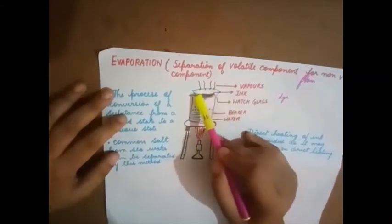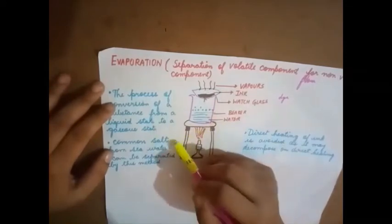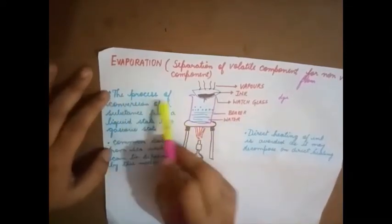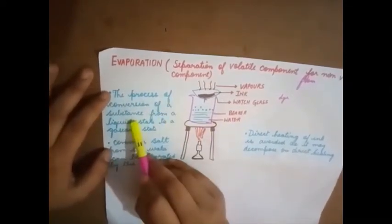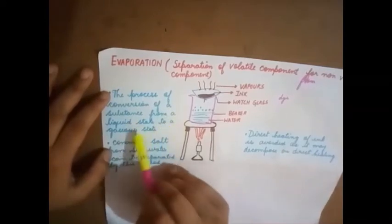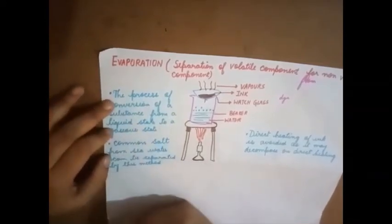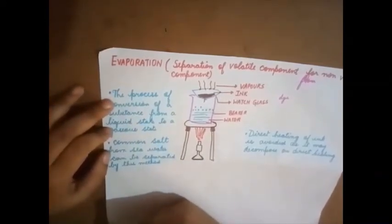water, which is a volatile component, gets evaporated easily, whereas the non-volatile component, that is my dye, is left behind.